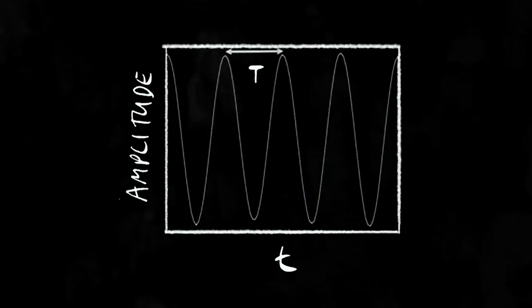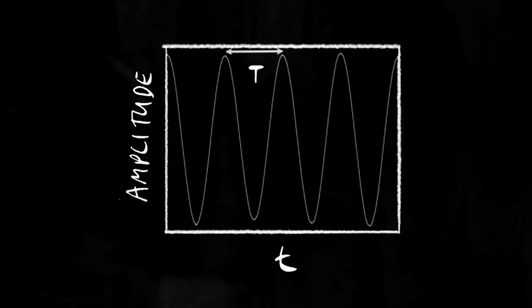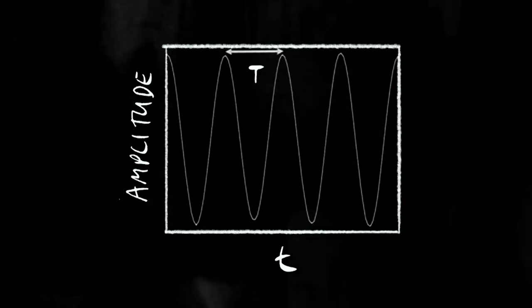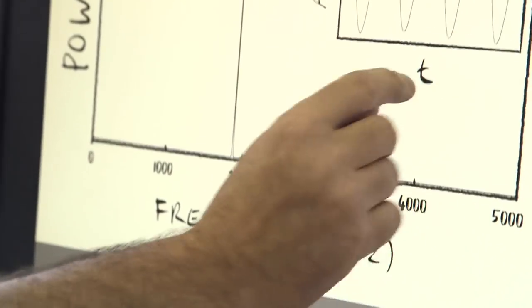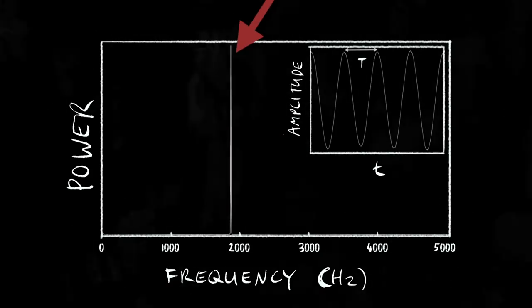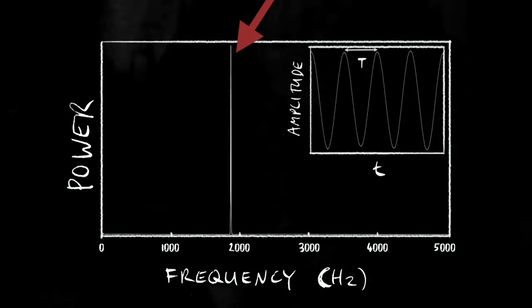Before we look at the frequency spectrum, let's look at a really simple example — one you could almost do at home. If we just whistle a note and whistle it for a long time, a whistled note is about as close to a sine wave as you're going to get. This is how its amplitude varies with time, and it looks pretty much like a pure sine wave. And if we look at its frequency — converting from time on this axis to frequency on this axis — we get a sharp spike, because it's only one pure frequency.